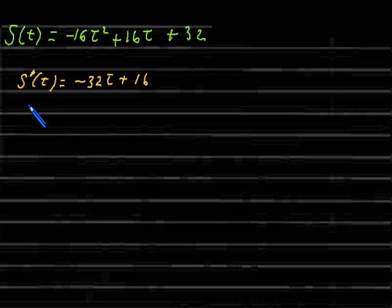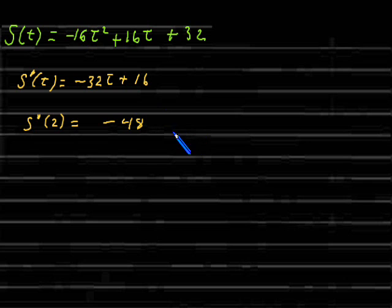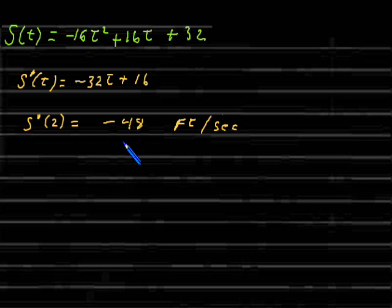Now I want to find the velocity at time t equals 2. I compute s prime of 2, which comes out to be negative 48 feet per second. The reason it's negative is because this diver is falling. When you fall, the velocity is negative. If the diver were rising, the velocity would be positive. This is how the derivative gave us this information.